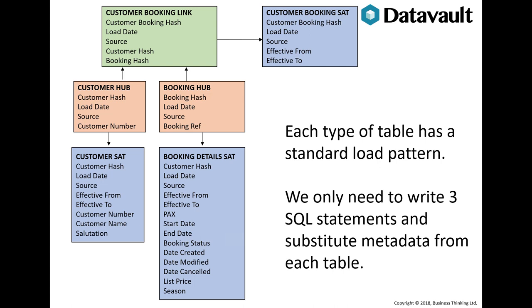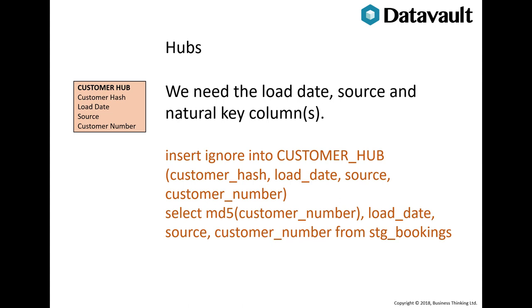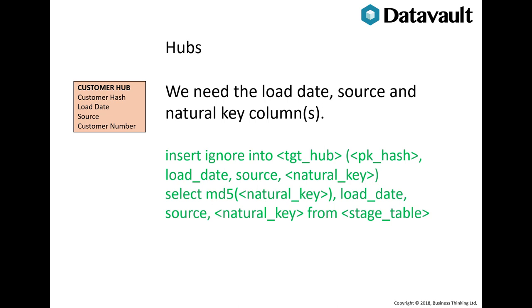What values do we have to play with in the hub? We have a primary key hash, some metadata, and the natural key. So we have a SQL statement like this pseudocode example. We use insert-ignore so that we don't overwrite any existing hubs, and that makes the statement idempotent. Let's replace the columns with tags — all hub inserts will follow that same pattern. It's as simple as that.